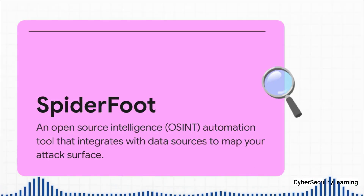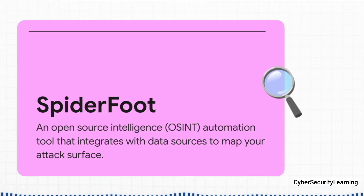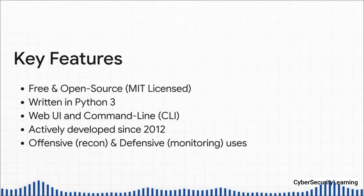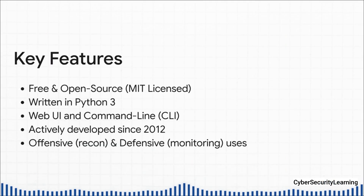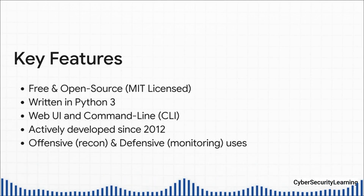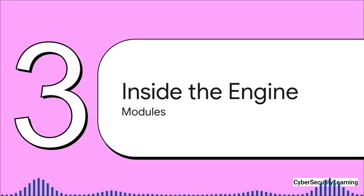Meet SpiderFoot. It's an OSINT automation tool — OSINT stands for Open Source Intelligence, basically any information you can find publicly. Instead of you doing the searching, SpiderFoot does it for you, automatically tapping into hundreds of different data sources, pulling all that info together and making sense of it. And the best part? It's totally free and open source. It's written in Python, so it's super flexible — you can use it through a simple web interface or the command line. Crucially, it has a dual-use nature: for red teams it's an incredible reconnaissance tool, and for blue teams it's an essential way to look at your own company from the outside and see the vulnerabilities an attacker would see first.